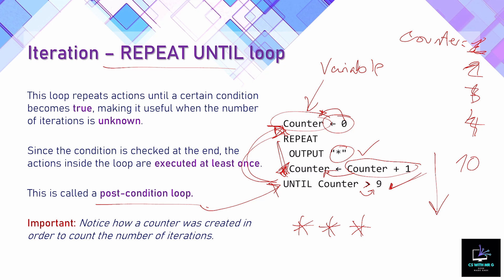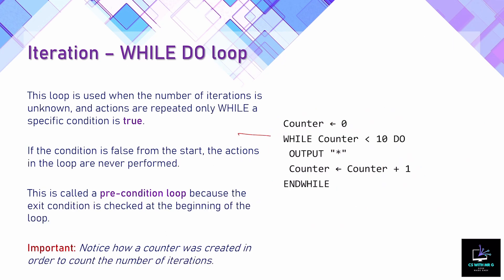The repeat until loop checks after the code has been run. The reason it will always loop at least once is that it doesn't matter what we set counter to at the beginning — even if counter was set to 999, the loop would run at least once because it doesn't check the counter until the last line of code. It would output one star, then check the counter value and stop, since 999 is more than nine.